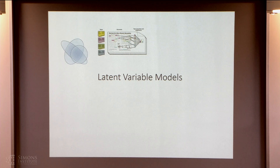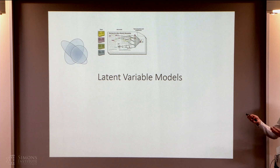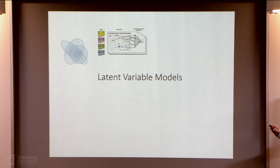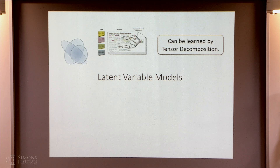One fairly traditional idea for learning representation is to use latent variable models. In latent variable models, we assume data come from some model with unknown parameters, and if we estimate these unknown parameters, they tell us about the structure in our data. For example, in mixture of Gaussians we learn the means and covariances; for topic models, we learn what words are used for each topic. For many simple latent variable models, we can learn them using tensor decomposition — estimating parameters with accuracy epsilon using polynomial samples and running time.